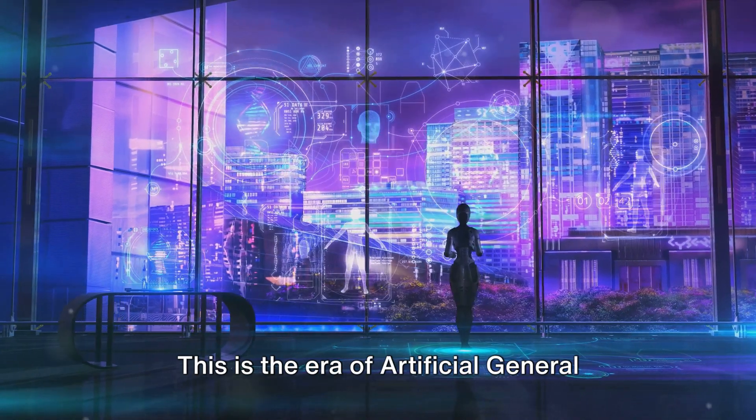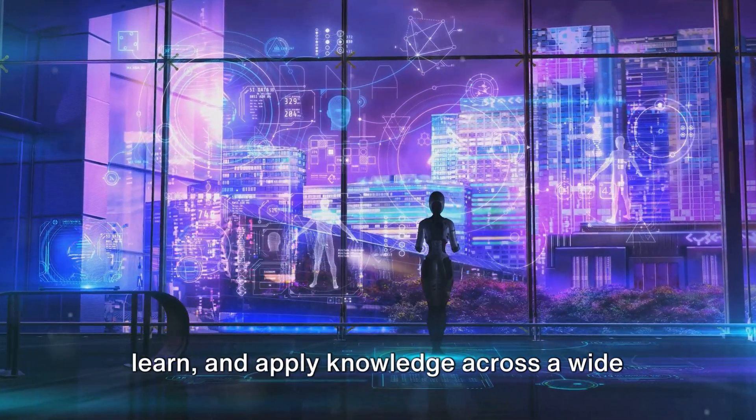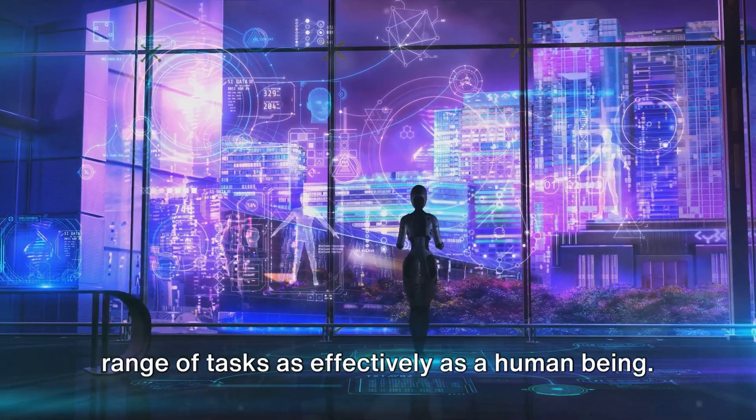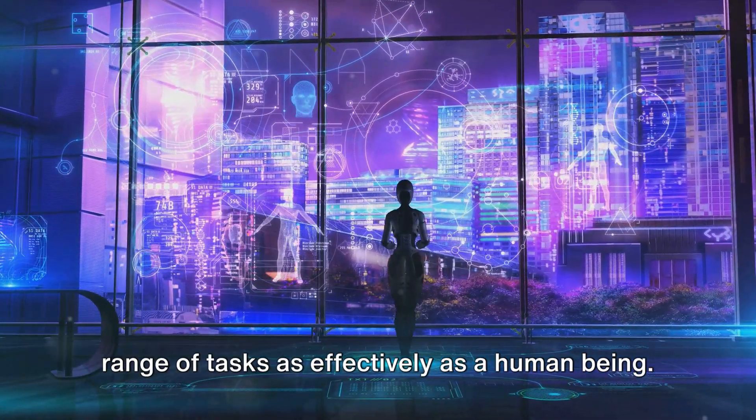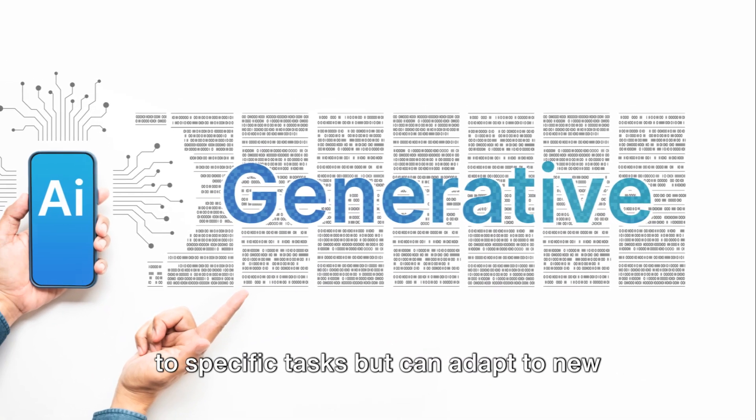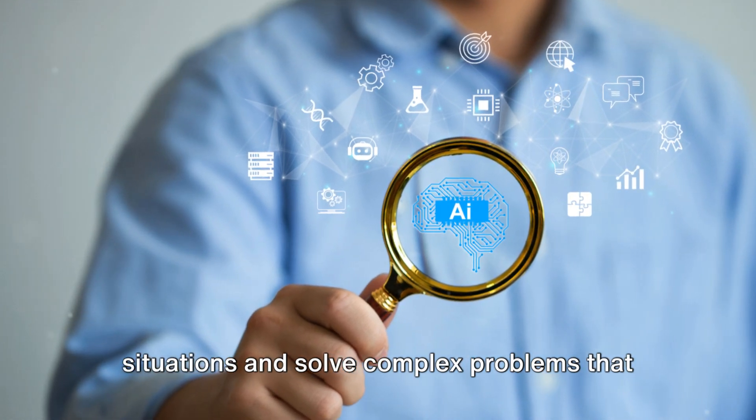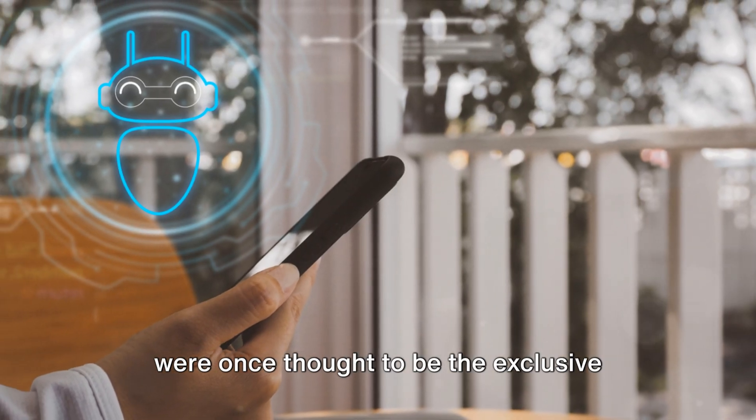This is the era of artificial general intelligence, where AI can understand, learn, and apply knowledge across a wide range of tasks as effectively as a human being. It's a time when AI is no longer limited to specific tasks but can adapt to new situations and solve complex problems that were once thought to be the exclusive domain of human intelligence.